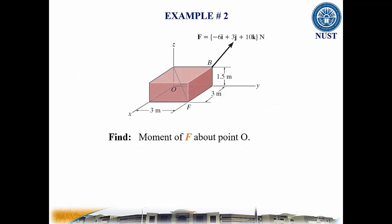The second example, which is based on the position vector. The force and geometry is shown. It asks to find the moment of force about point O. So, first we will find the position vector R_OB, and then we will take a cross product of this position vector with force vector.